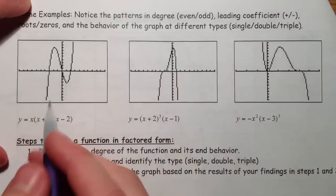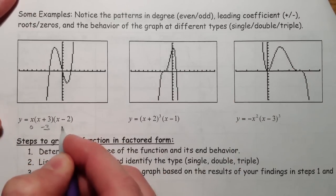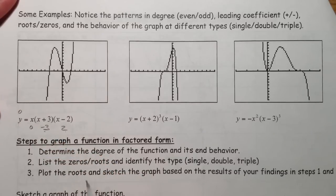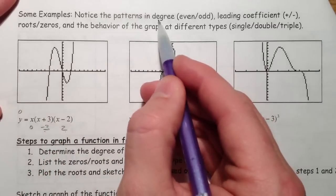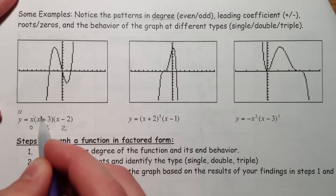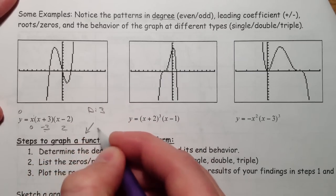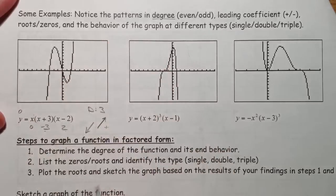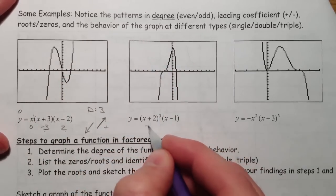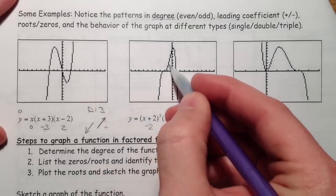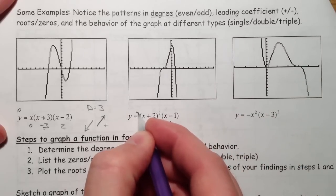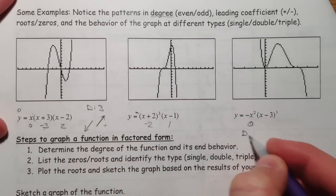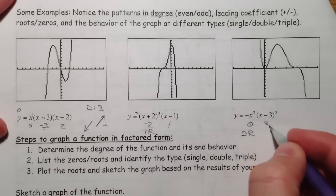So here are some more examples. Notice the x-intercepts are zero, negative three, and positive two — because x equals zero, x plus three equals zero giving negative three, and x minus two equals zero. The degree is one, two, three — degree three and it's positive, so the leading coefficient is positive and it goes up to the right. On the next one, negative two is a triple root and positive one — and actually this should have a negative in front to make it go down, so correct that on your paper. Then the next one has a double root at zero and a triple root at three, so at three it's doing the slowdown and at zero it's doing the bounce, tangent to the x-axis.